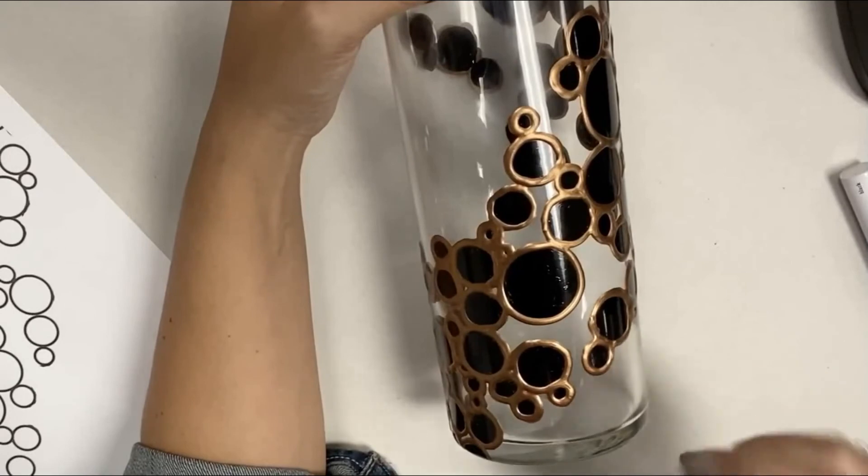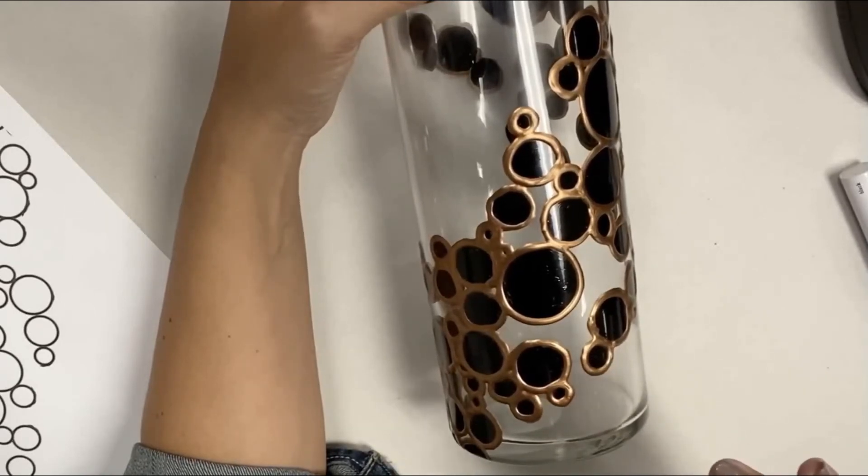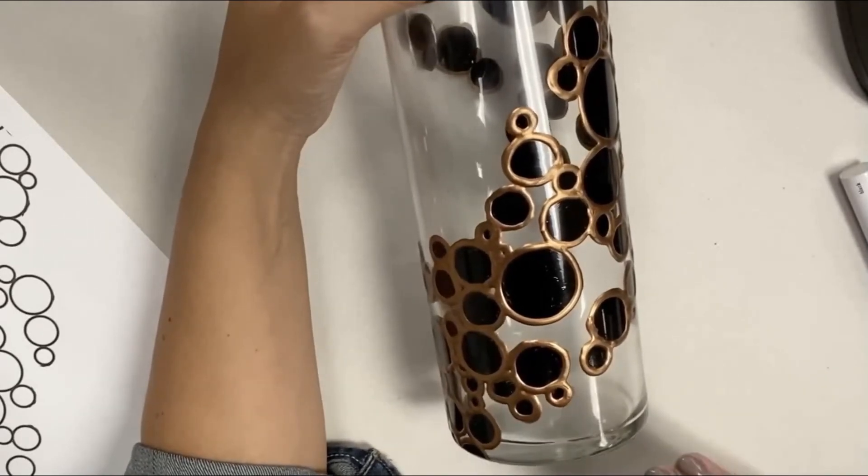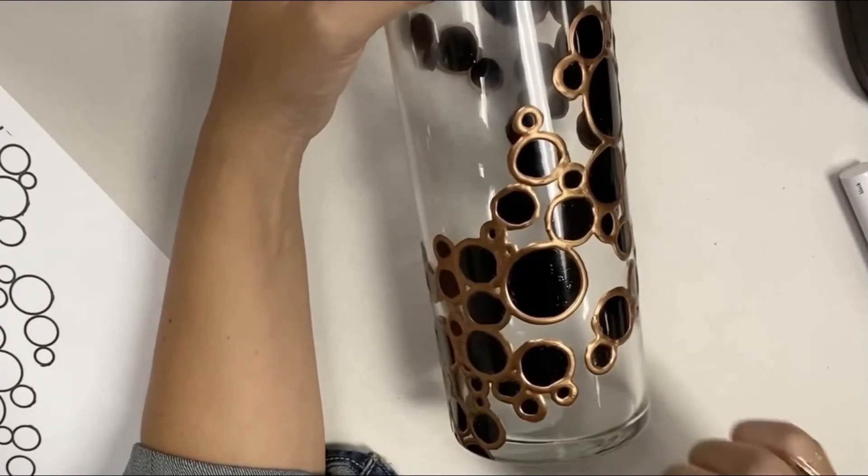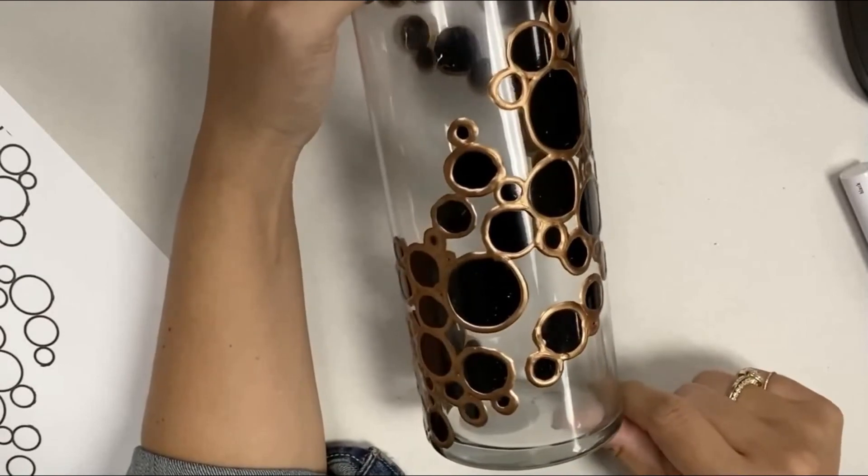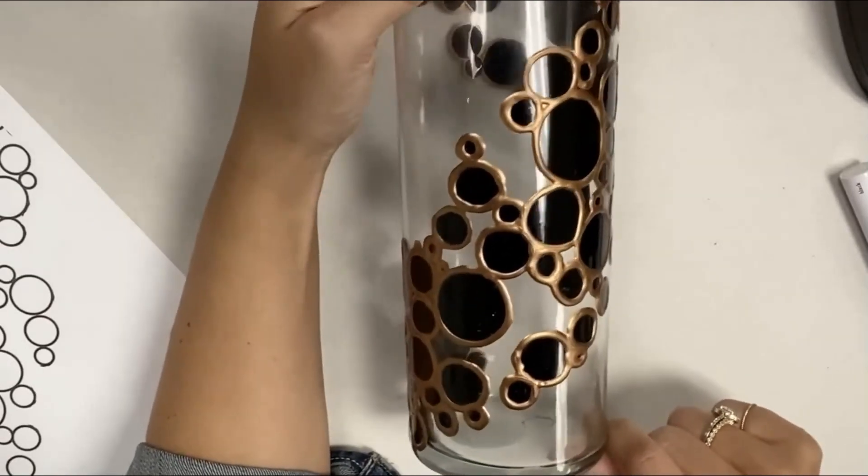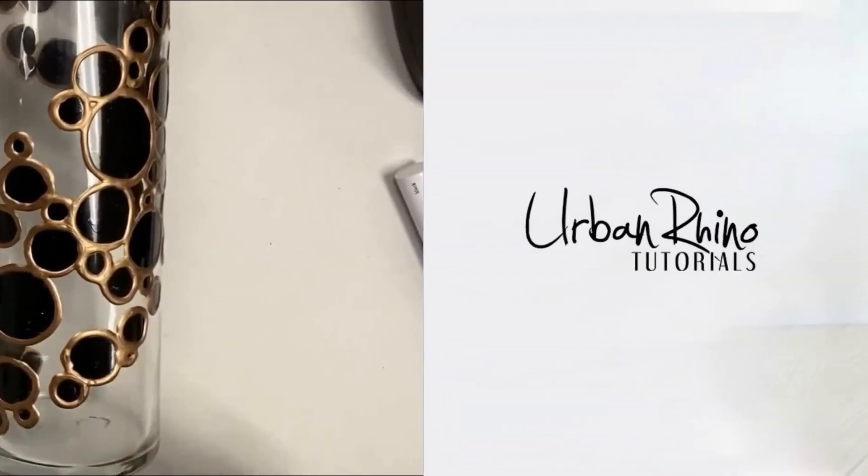And then if you put a little bit of the lighter fluid on like a washcloth or a paper towel, you can wipe off any residue that's left, and it cleans it right up. It's amazing, little hidden secret there. So that is it for glass painting, guys. I hope you guys enjoyed this tutorial, and I will see you next time.